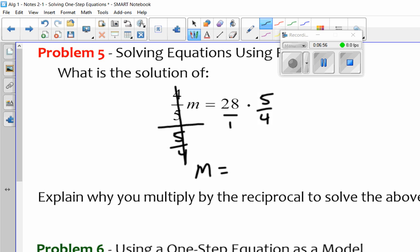I want to look diagonally here. Can I reduce that or cross-cancel? And 4 goes into 28 seven times, goes into itself once. So really, I'm left with 7 times 5 is 35.